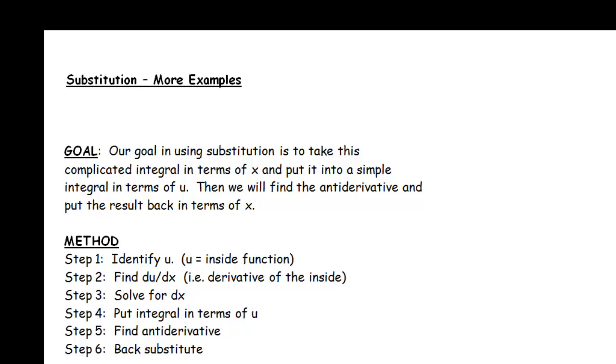The goal when we're using substitution is to take the complicated integral that's in terms of x or t or whatever variable and put it into a very simple integral in terms of u. And then we find the anti-derivative and put the result back into terms of the original variable.